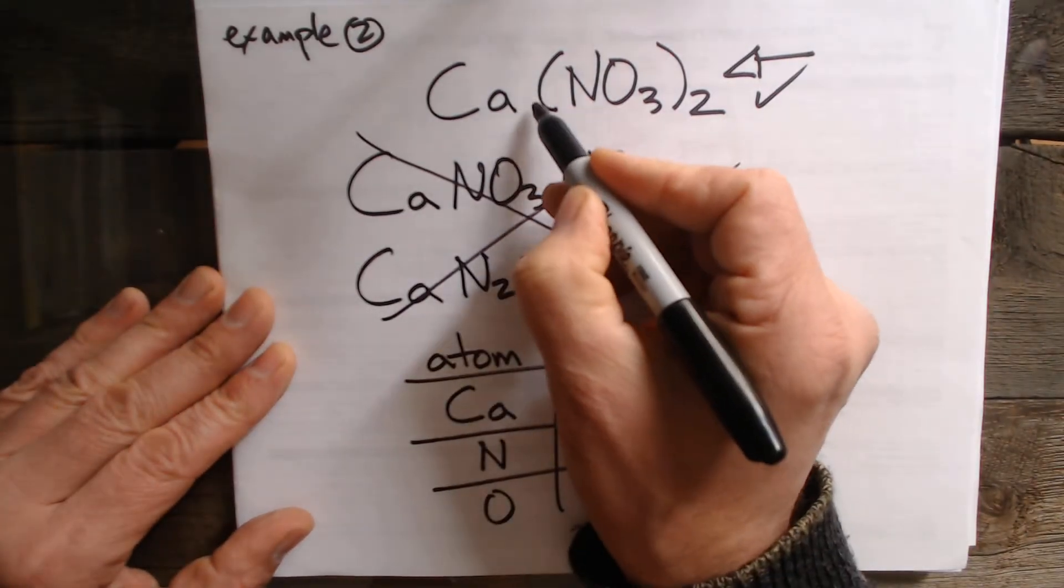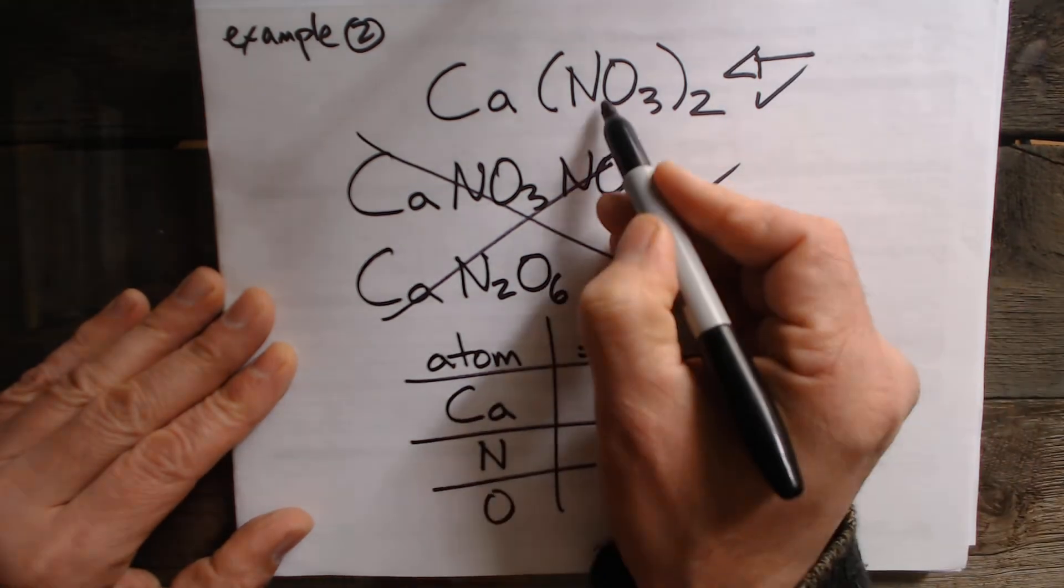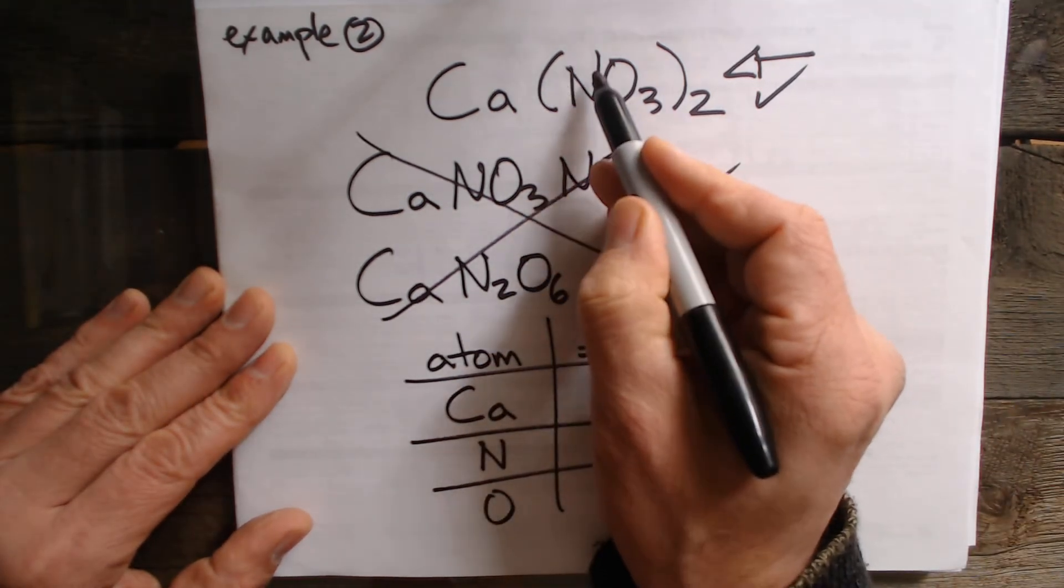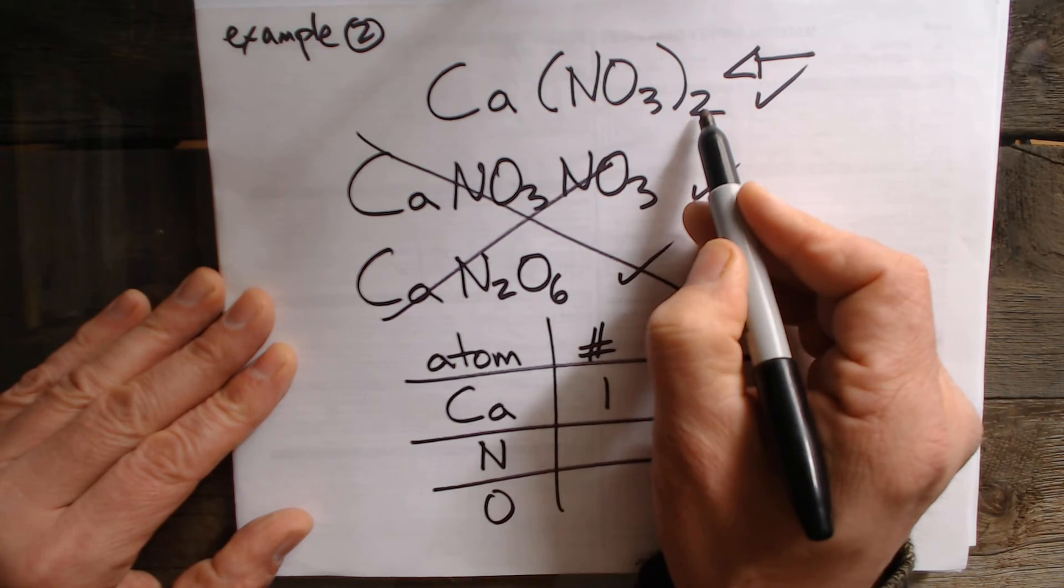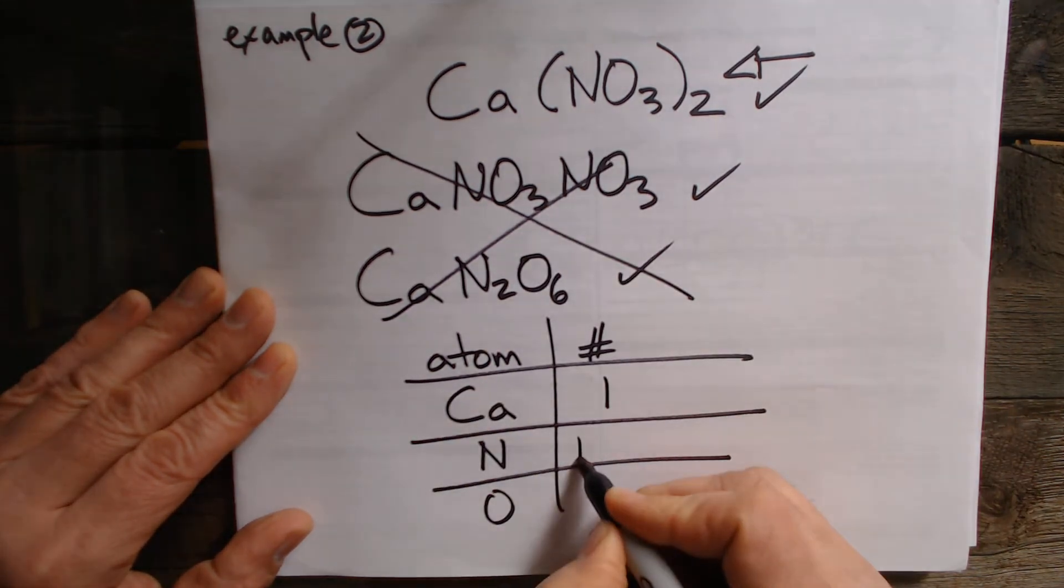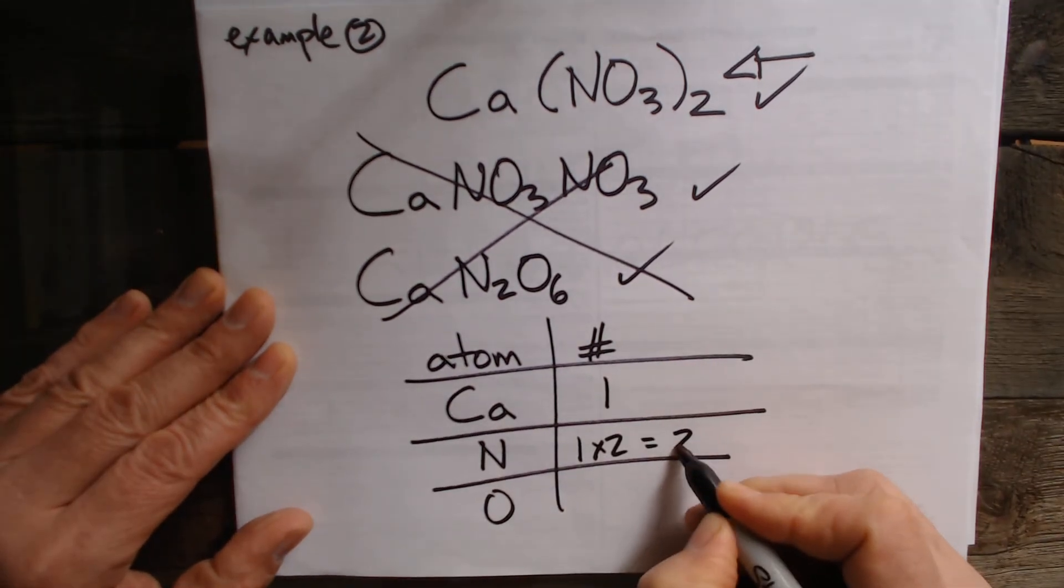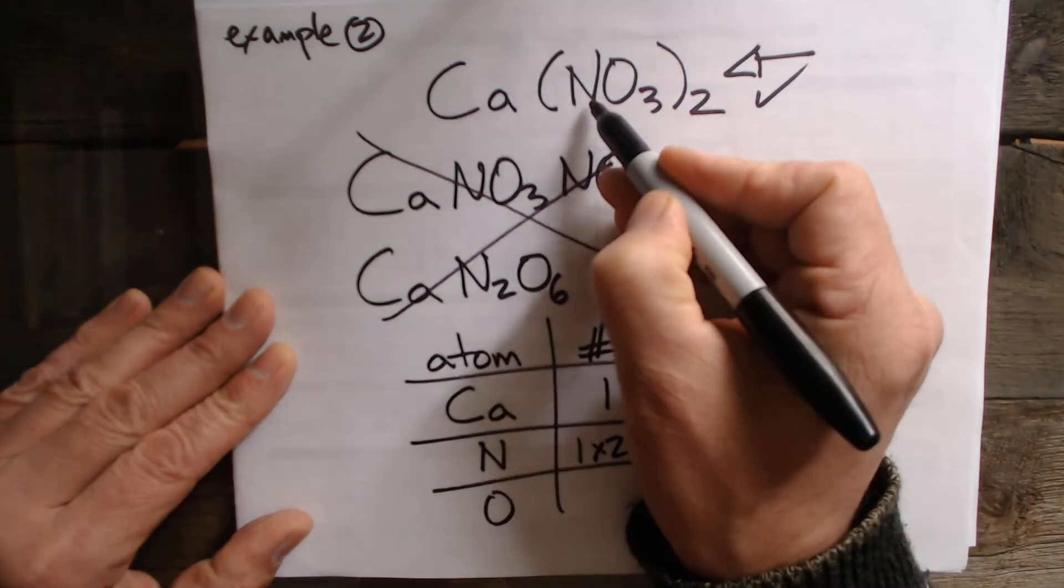So there's no number here so we assume it's 1. We know it's 1. There's no number there so there's 1N but there are two groups with 1N each. So it is the 1 times the 2 equals a total of two atoms of nitrogen.